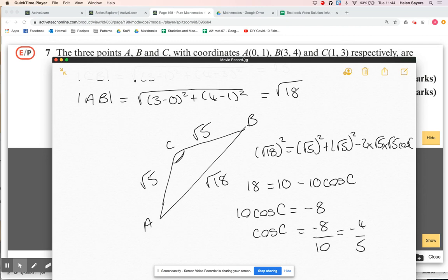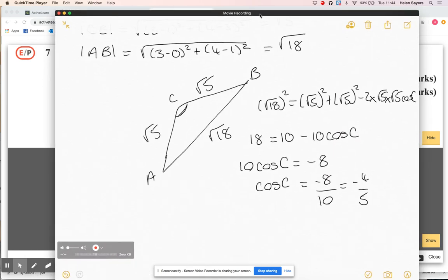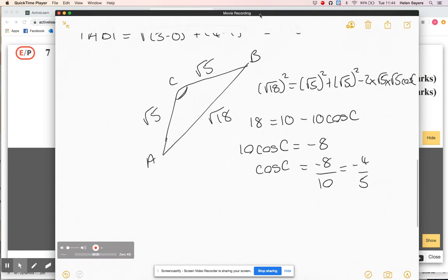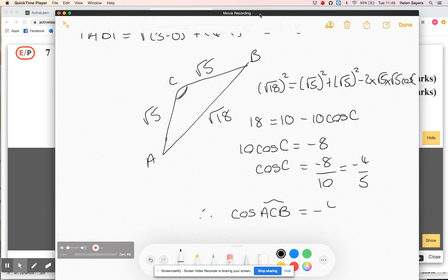So cos C is minus eight over 10. I know it was supposed to be a negative, I'm hoping it was minus four fifths, brilliant. So I've been calling it C in my working, obviously that's another way of defining the same angle, so what I want is cos of ACB is minus four fifths. Lovely.